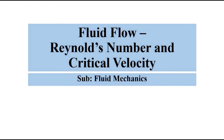Hello friends, welcome to Engineering Tutorial. In our previous discussion related to fluid mechanics, we discussed different types of fluid flow: streamlined flow, steady flow, laminar flow, and turbulent flow. In this video, we are going to discuss two important parameters associated with liquid flows — Reynolds number and critical velocity — which determine whether the flow of liquid in a pipe or vessel is streamlined or turbulent.